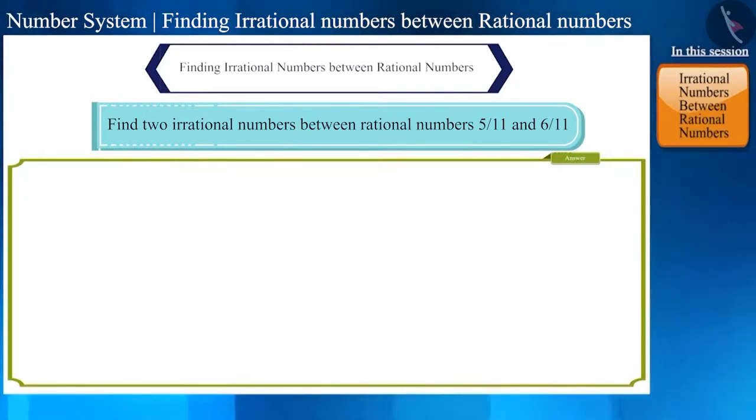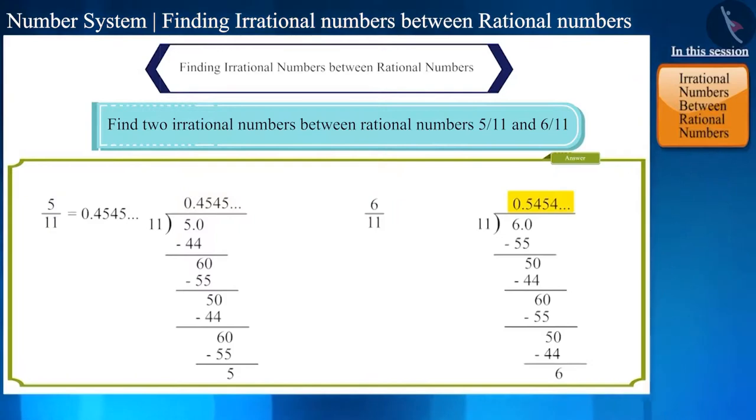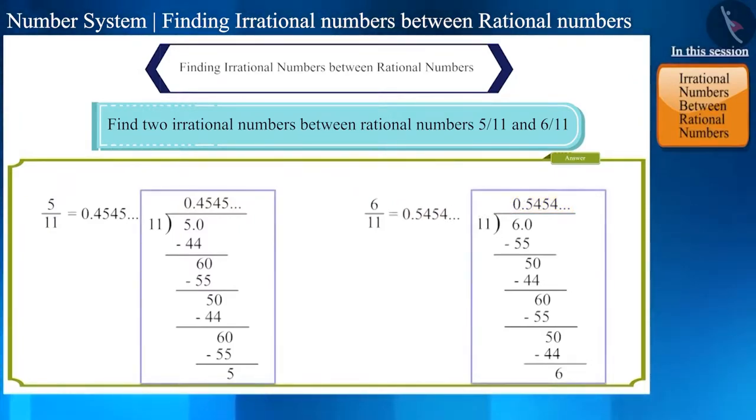The decimal form of 5 by 11 is 0.45454545 and the decimal form of 6 by 11 is 0.545454 etc. You can obtain these by the division method.